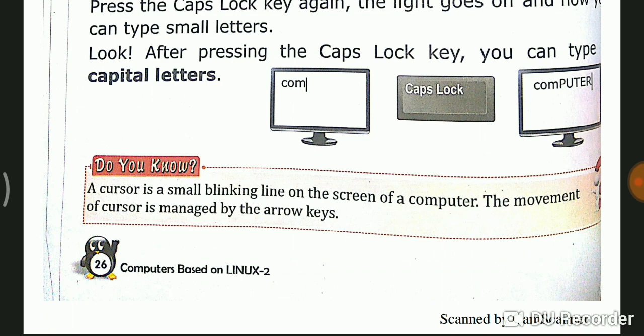A cursor is a small blinking line on the screen of the computer. The movement of the cursor is managed by arrow keys. Cursor is very important to understand because the cursor is a small blinking line, and the arrow keys can move it forward and back.